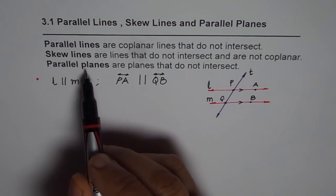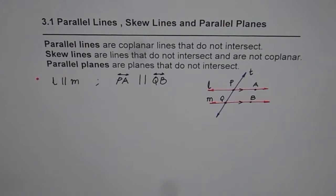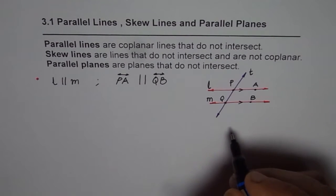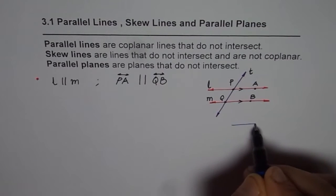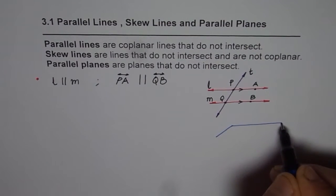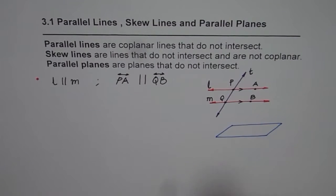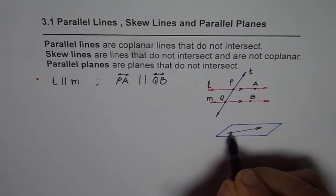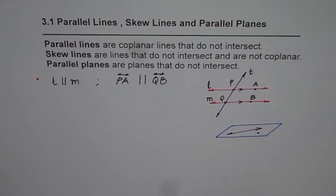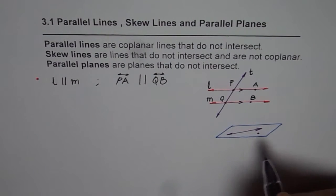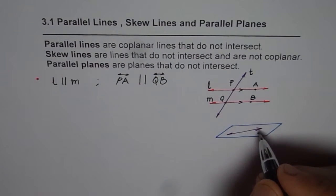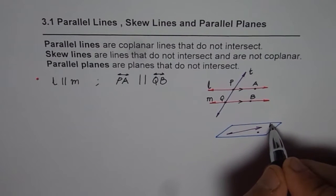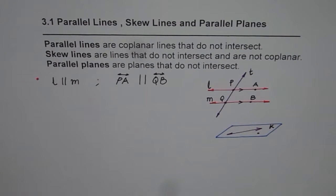Now let us talk about parallel planes and skew lines. For drawing a plane, you should make parallelograms. Let me make two parallelograms — this first one will represent a plane. A plane can be defined with the help of a line and a point, or three points. To label a plane, we use capital letters — let us say K is this plane.